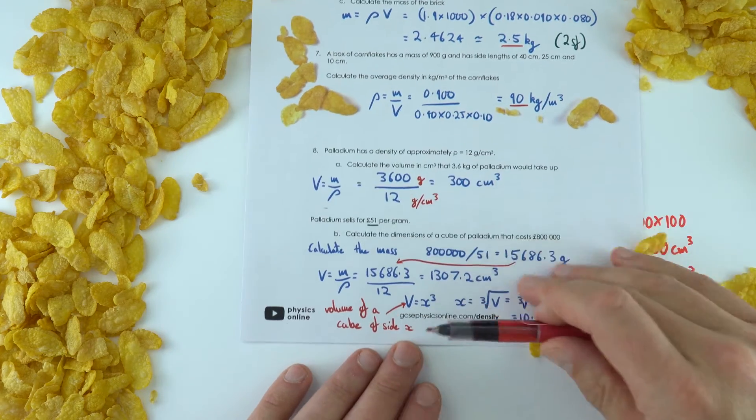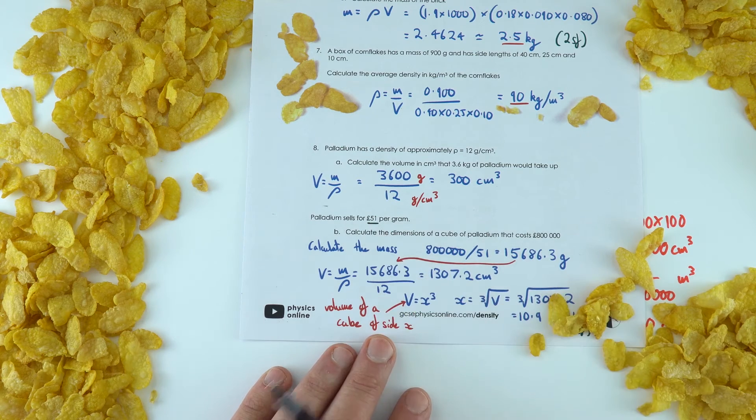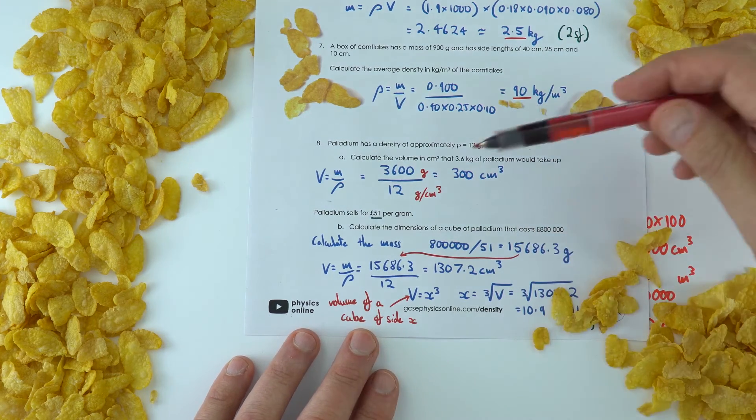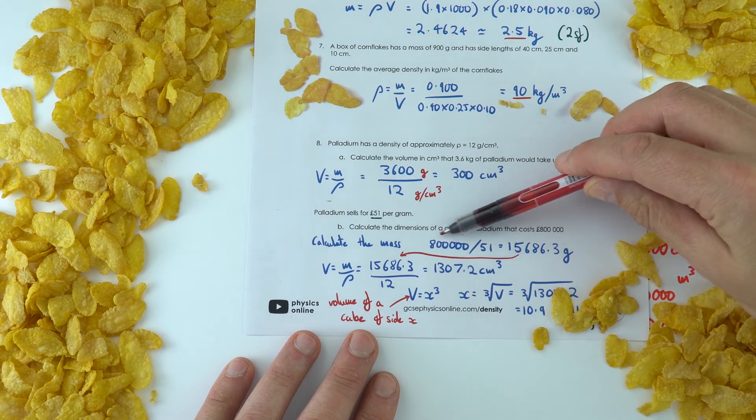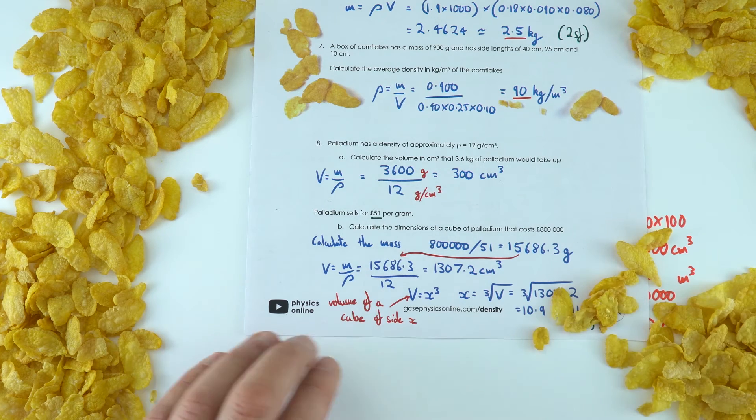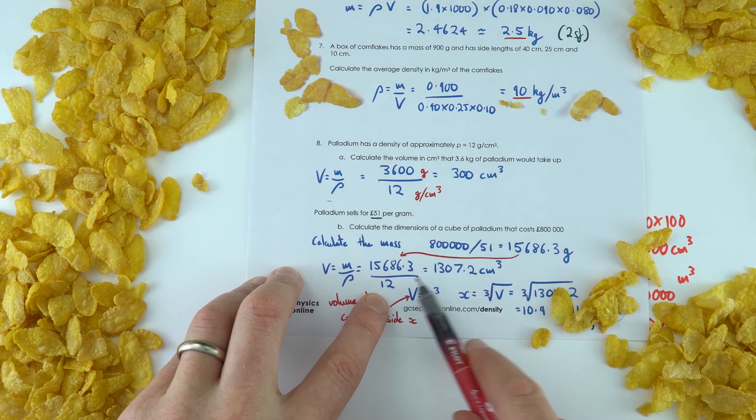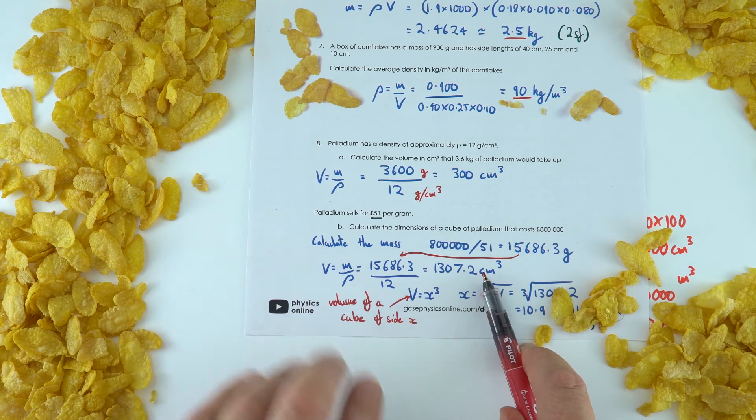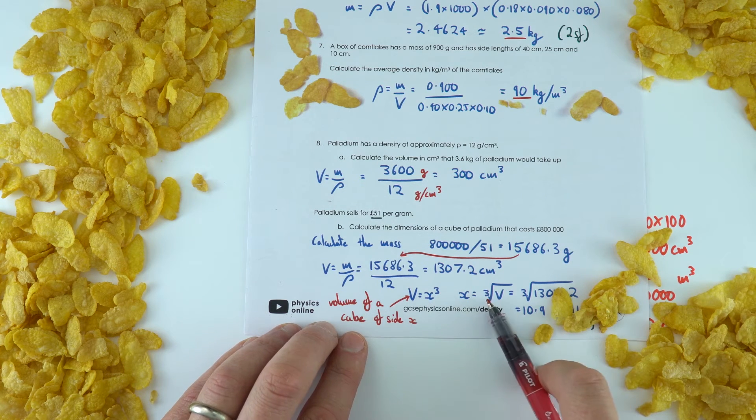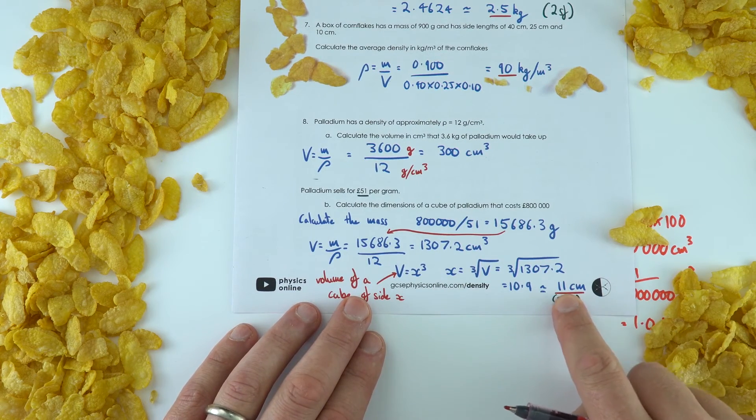Now then we've got some more information. This is very much a GCSE math-style question. If we know that one gram sells for 51 pounds, how much, if you had a cube of it which cost 800,000 pounds, what would be the dimension of that cube? So the first thing I did was I divided the total price by the cost per gram to get the total amount of grams. And then we can work out the volume, because if we know the mass in grams, and we know the density in grams per cubic centimeter, we can work out the volume in cubic centimeters. And then, because it's a cube, we know that the volume is going to be equal to the length of one of the sides cubed. So I took the cube root of this volume, and I left everything in centimeters to get the sides equal to 11 centimeters.